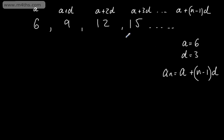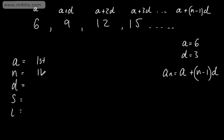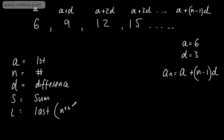Whenever answering questions on arithmetic sequences, I strongly suggest writing down the side of the page: a, n, d, s, and l. Most of the time we'll be given three pieces of information to find the fourth. Here, a is the first term, n is the number of terms, d is the common difference, s is the sum of terms, and l is the last term — or the nth term.